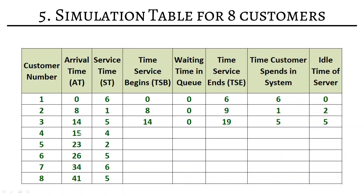Customer 4 arrived at minute 15, but the cashier was busy until minute 19. So service begins at minute 19. The customer had to wait 19 minus 15, which is 4 minutes. Service lasts 4 minutes, so 19 plus 4 is 23 — service ends at 23. Time spent in the system is 4 minutes of waiting plus 4 minutes of service, which is 8 minutes. The server was not idle during this period, so idle time is 0.